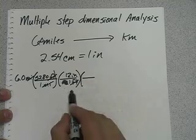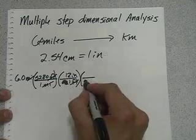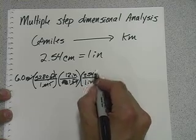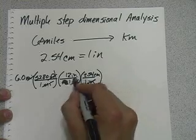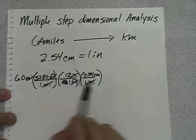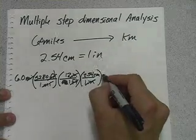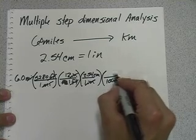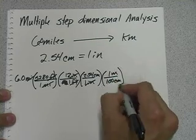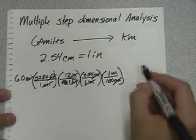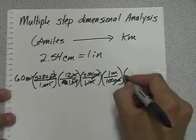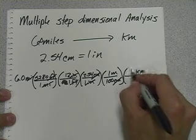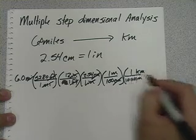Now we want to go from inches to centimeters. That's right here. We know that one inch equals 2.54 centimeters. Now we can go from centimeters to meters. 100 centimeters equals 1 meter. Our centimeters cancel. And we can go from meters to kilometers because one kilometer equals 1,000 meters.